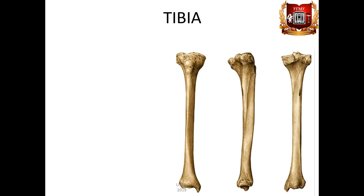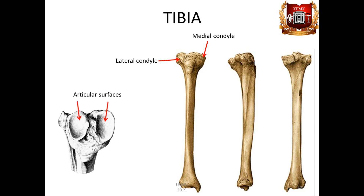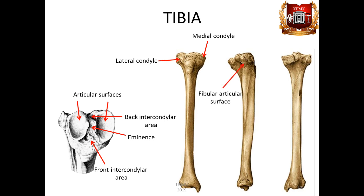The tibia has a proximal and distal epiphysis and body. On the proximal epiphysis we can see the lateral and medial condyles. The articular surface of the condyles is turned upward and articulates with the condyles of the femur. Between the articular surfaces of the condyles, an intercondylar eminence is located, eminentia intercondylaris, which consists of lateral and medial tubercles. Below the lateral condyle on the lateral side we can see a fibular articular surface, facies articularis fibularis.